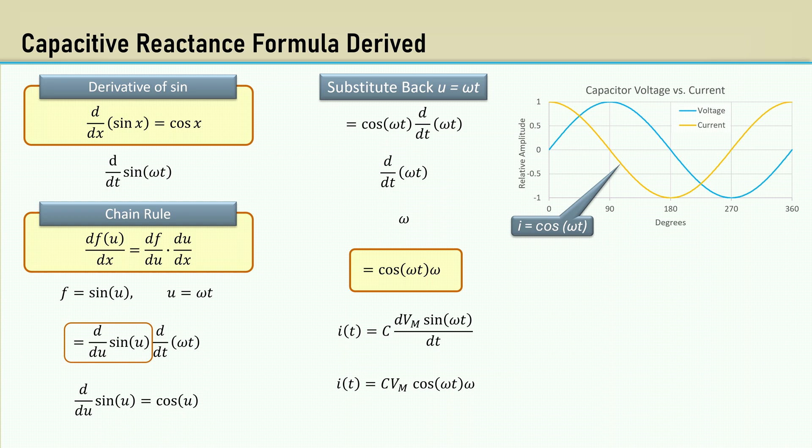For the reactance, we need to determine the maximum current, which we know happens at time equals zero. So when omega T is zero, the cosine of zero is one. That makes cosine of omega T go away, and we are left with omega C V max.